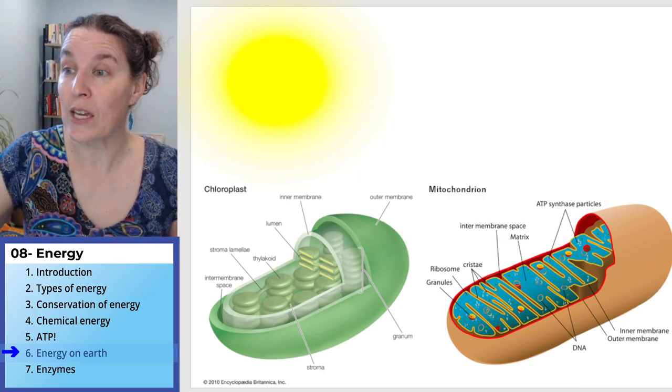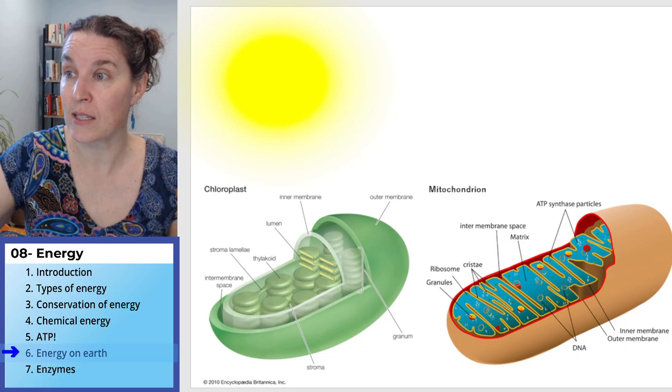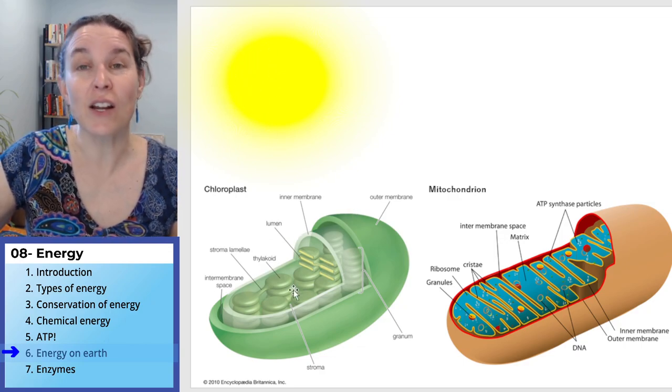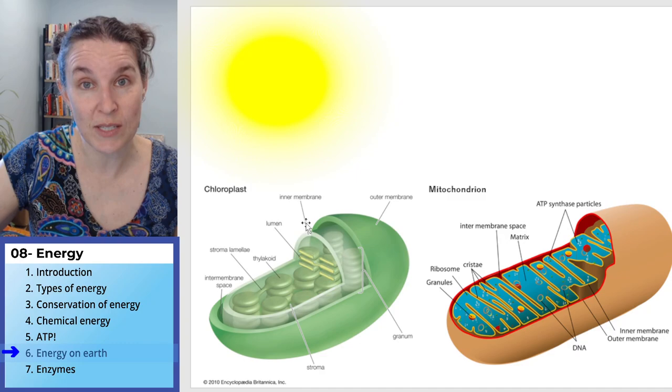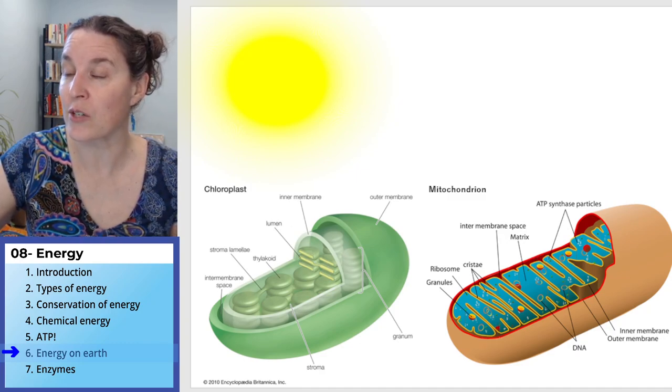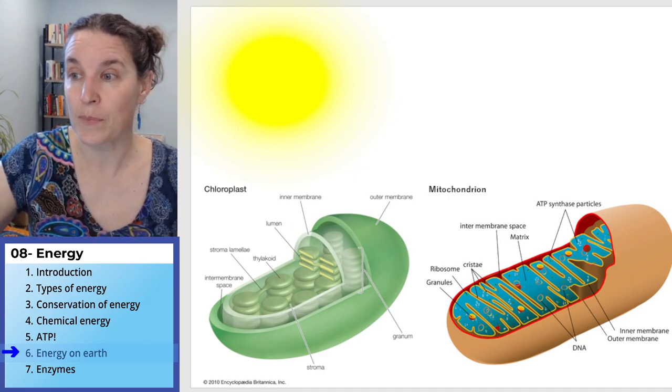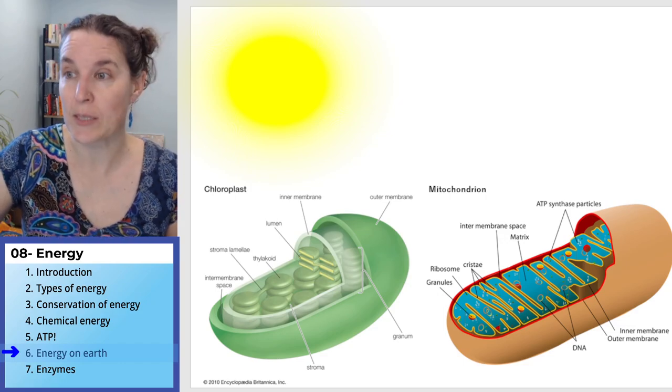So look, here I've got the sun. Let's see if you can see this. I've got the sun. I've got a chloroplast. That's where photosynthesis takes place. And I've got a mitochondrion. This is where cellular respiration takes place.